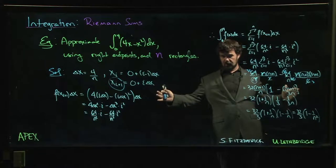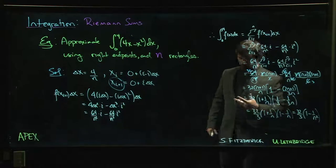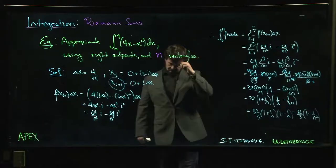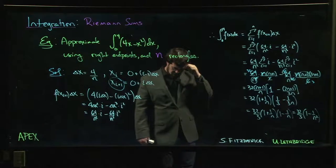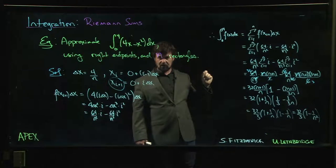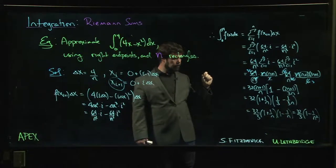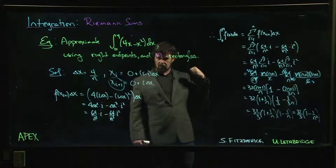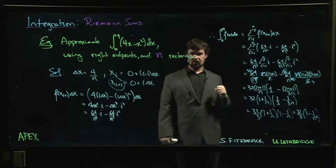That tells us that if we want to get the exact area here, all we need to do is consider a limit. Let the number of rectangles go to infinity. We try not to think too hard about what that means. We're adding up the area of infinitely many rectangles, each of which is infinitely thin, but somehow it comes out to a value, 32 over 3.